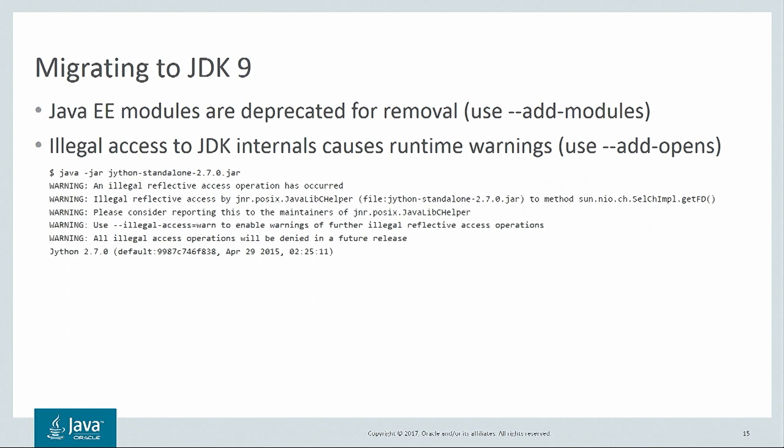Second, a lot of tools and libraries try to access parts of the JDK that are meant for internal use only. Unfortunately, it'll take a while for tool and library developers to move away from this practice. So JDK 9 temporarily allows access to JDK internals but prints a warning when it happens. There's a command line flag to avoid these warnings, so please check with tool and library developers about how to deploy on JDK 9.